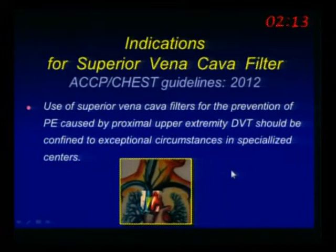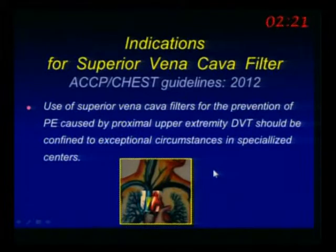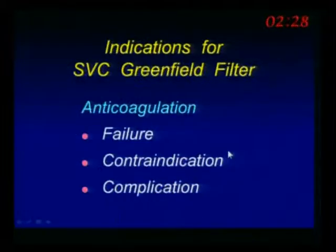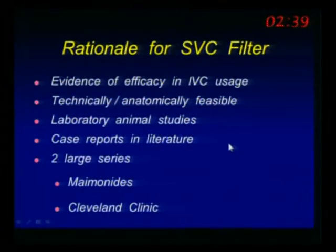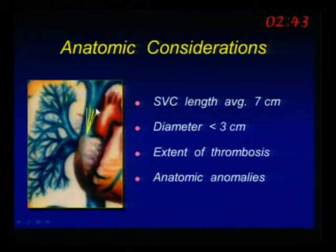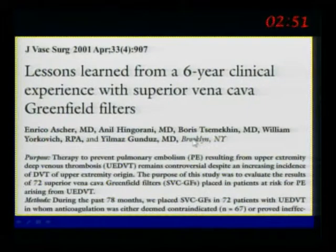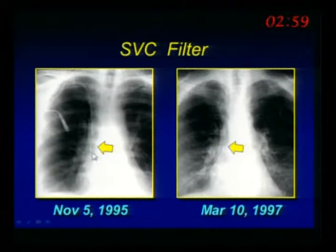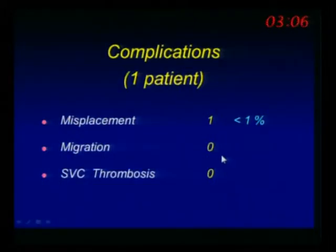Just briefly on the indication for the Superior Vena Cava filter — we have one of the largest experiences in the world. The CHEST guidelines last year said to stop using SVC filters and use them only in exceptional circumstances at specialized centers. I actually disagree with that. I see the indication as the same as for lower extremity, because 5% to 7% of patients with upper extremity DVT — proximal DVT — will develop PE, as shown by the Mayo Clinic and our very large series of over 200 patients. As long as the SVC is more than 3 cm, there are no clots, and no anatomic anomaly, you can safely place it. We have 12 years of follow-up now with SVC filters, now at 250 cases, and the filter remains in place safely.